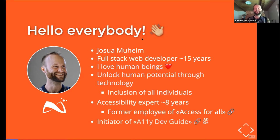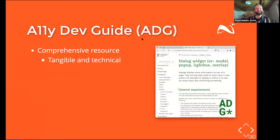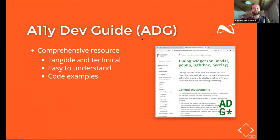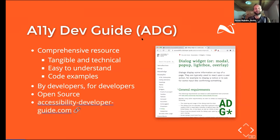I'm the initiator of the Accessibility Developer Guide, which is a comprehensive resource covering all accessibility topics. It's tangible, technical, and still easy to understand, offering lots of code examples you can use as inspiration or copy and paste into your own project. The whole guide, including the code, is written by developers and for developers — but also designers, content creators, and other stakeholders. It is open source. Head over to accessibility-developer-guide.com — we're happy to welcome you in our small but enthusiastic group of Swiss and international web agencies developing this guide together.